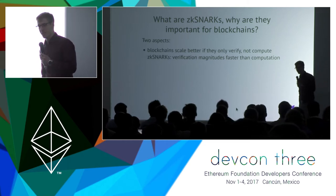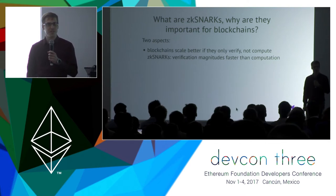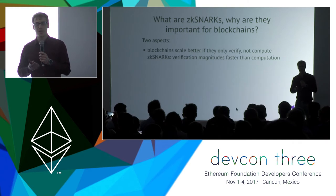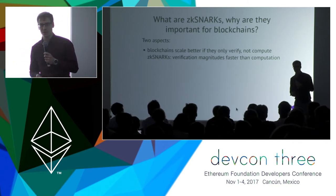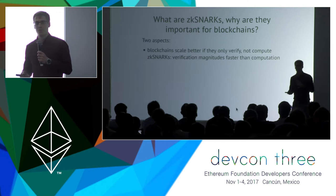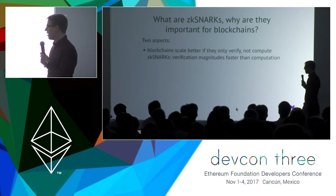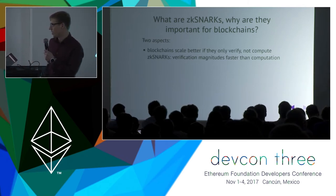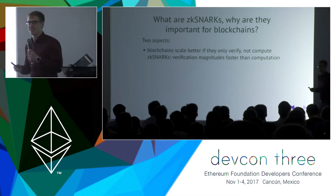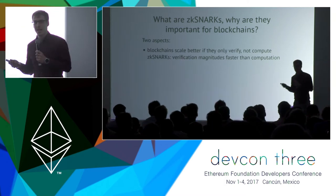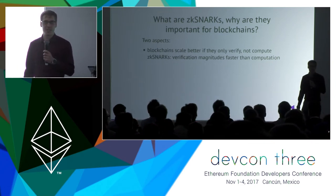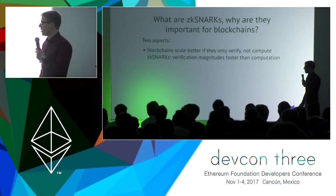The first aspect is that blockchains scale much better if they only verify a computation instead of actually doing the computation. The great thing about ZK-SNARKs is that the verification is magnitudes faster than the actual computation. The downside is that ZK-SNARKs themselves add an overhead, but we hope this balances out so that they can actually be a scaling solution in the future.